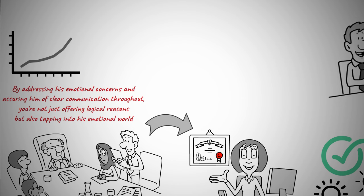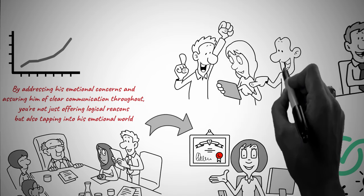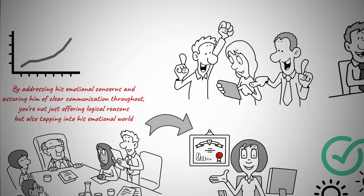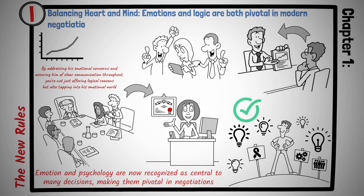The negotiation landscape has witnessed a seismic shift. It's no longer sufficient to rely solely on traditional methods. Emotions, feelings, and the human psyche have taken center stage. Recognizing this change and adapting to it is what differentiates successful negotiators from the rest. Principle number one is balancing heart and mind. Emotions and logic are both pivotal in modern negotiations.